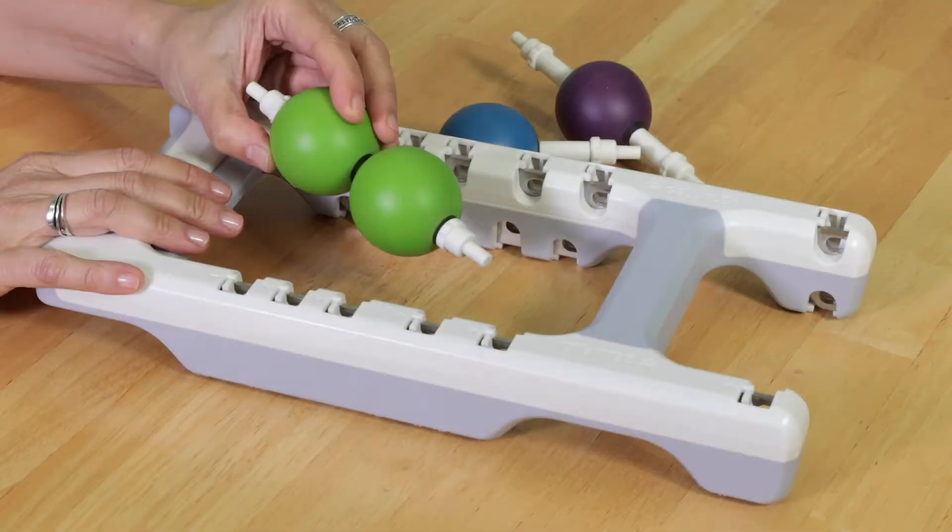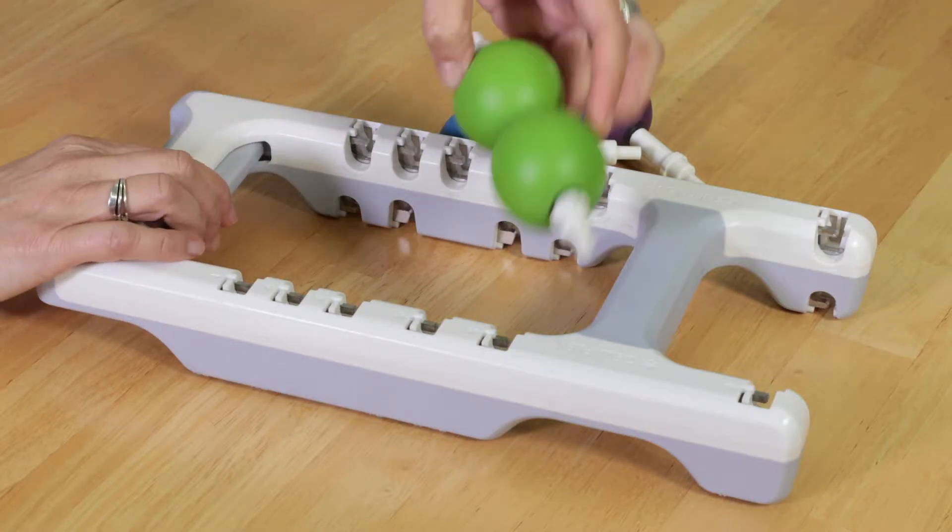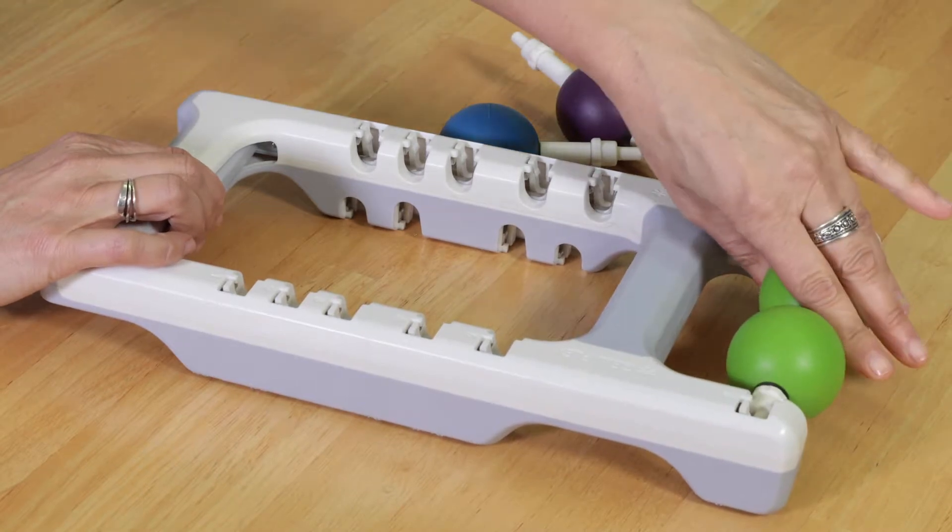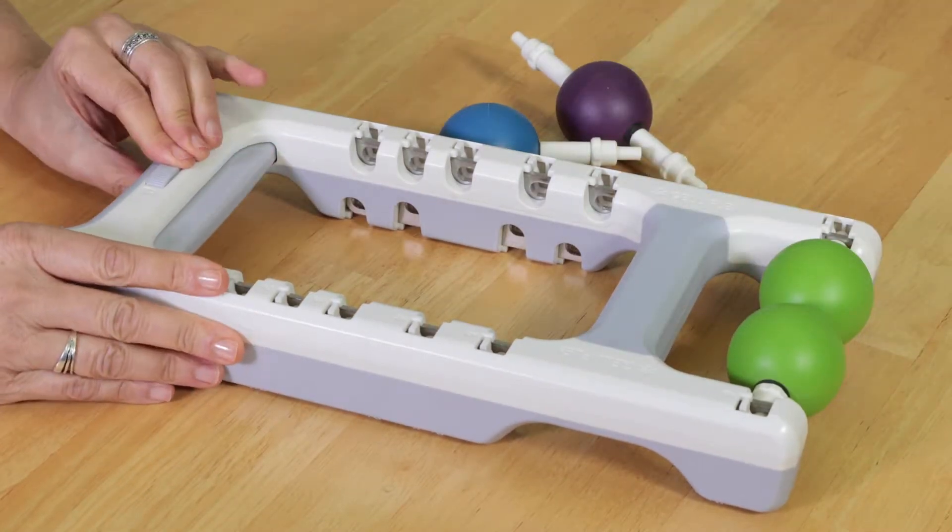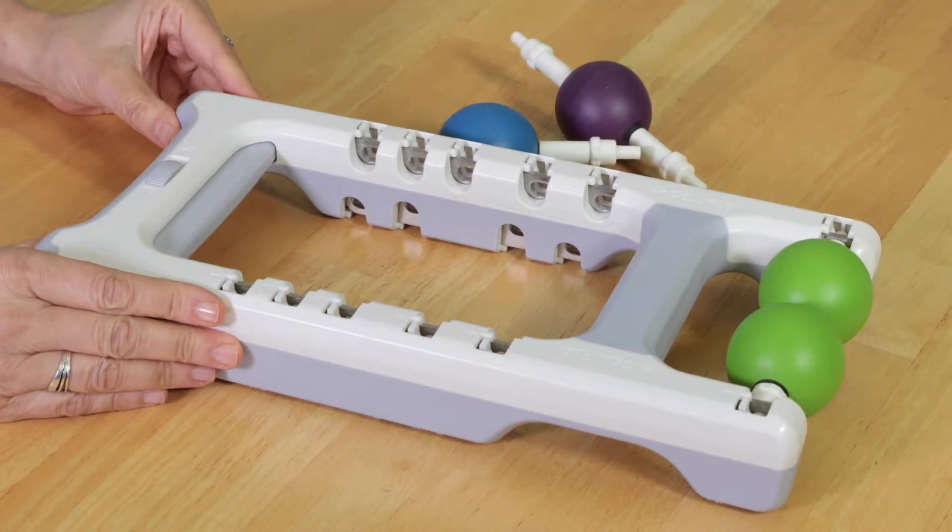To set up your abacus for biceps rolling, you can select a one ball or two ball assembly. Simply place the ball assembly in the end slot and lock it before using. In this video, I'm going to show you how to do biceps rolling using the abacus.